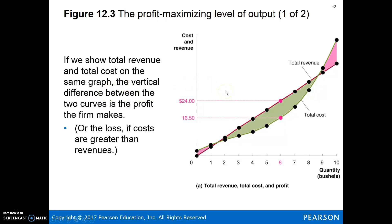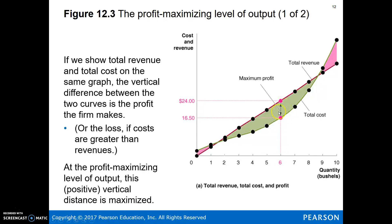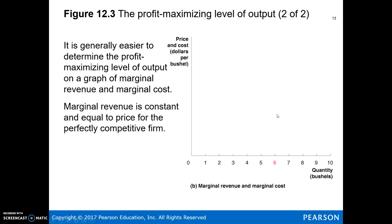So now we're graphing total revenue and total cost. The goal here is to maximize profit by choosing the appropriate level of output. Looking at total revenue P times Q and total cost — which includes explicit and implicit costs — that difference is our profit. As we're maximizing profit, profit is going to be greatest when the vertical distance between total revenue and total cost is the largest. That distance is increasing up to a certain point and then starts falling again. At that quantity, that is going to be the profit maximizing quantity — that vertical distance is total profit.